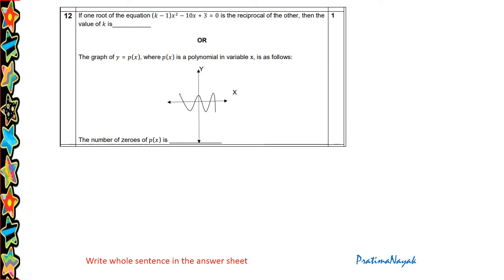If one root of the equation k minus 1 x square minus 10 x plus 3 equals 0 is the reciprocal of the other, then the value of k is blank. So if one is alpha we can take the other as 1 by alpha because it is reciprocal. So what is the product of roots now? Alpha times 1 by alpha equals 1. So product equals c upon a. What is c? c is 3. What is a? a is k minus 1. So 3 upon k minus 1 equals 1. So simplifying, k equals 4.